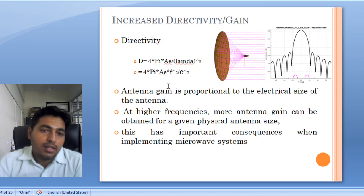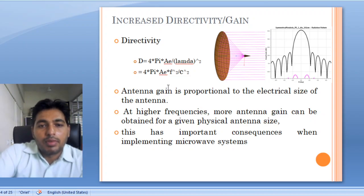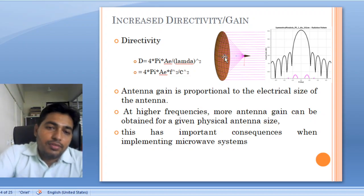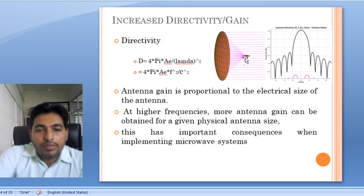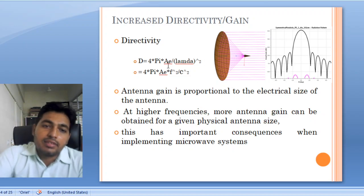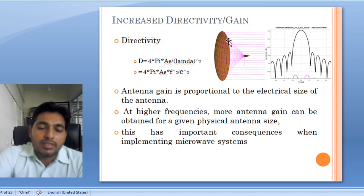So at higher microwave frequency, more antenna gain can be obtained. If we use the same aperture at a lower frequency it will give less directivity, but if we use it at microwave frequency this will give us larger gain or larger directivity.